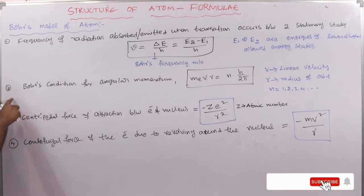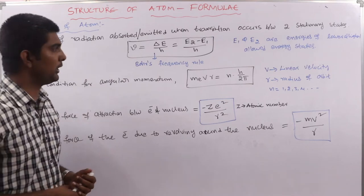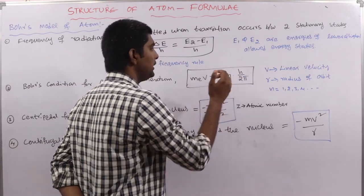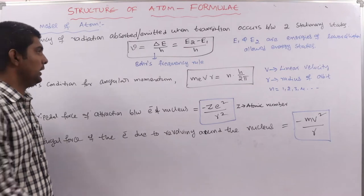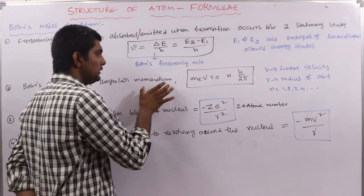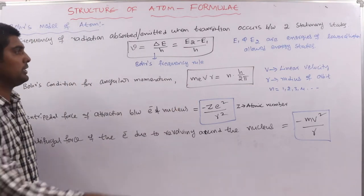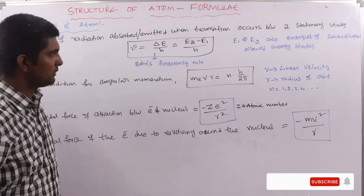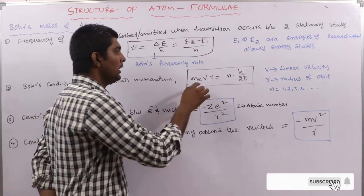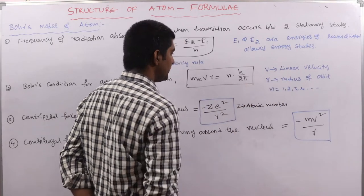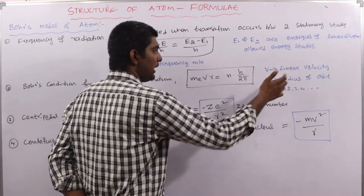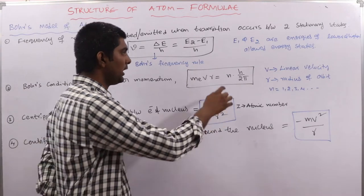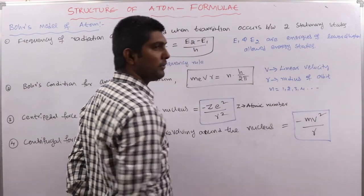Bohr's condition for angular momentum: mevr = nh/2π, where me is the mass of the electron, v is the linear velocity, r is the radius of the orbit, and n = 1, 2, 3, 4…